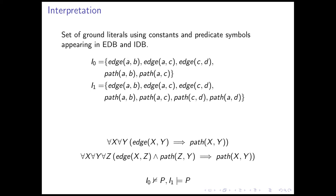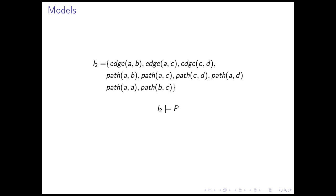In our example, we have I0 which has edge AB, edge AC, edge CD, path AB, and path AC. This interpretation does not satisfy the program P because there is no path CD. For all assignments of X and Y — so also for C and D — we do have edge CD, but there is no path CD in the interpretation. On the other hand, the interpretation I1 does satisfy our program P. We call an interpretation which satisfies a program a model of the program. However, there is more than one model for a program P.